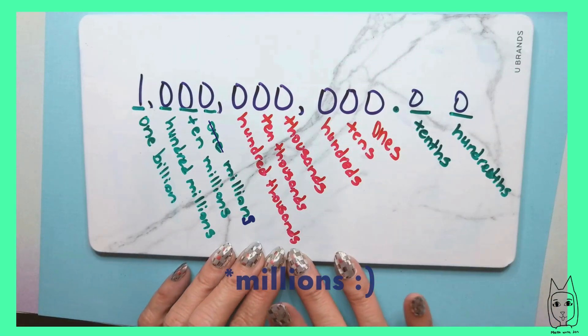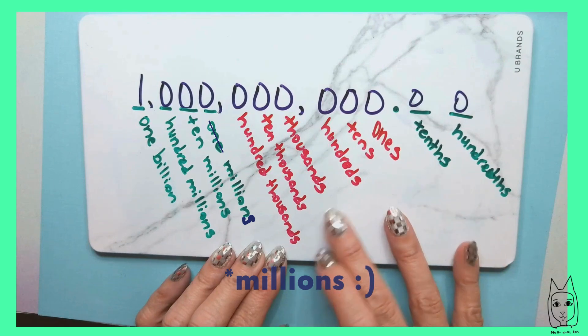So in grade three, you learned about the tens, the hundreds, the thousands, ten thousands, and hundred thousands.